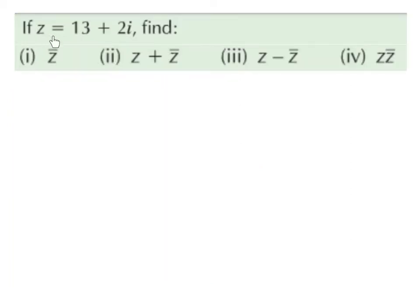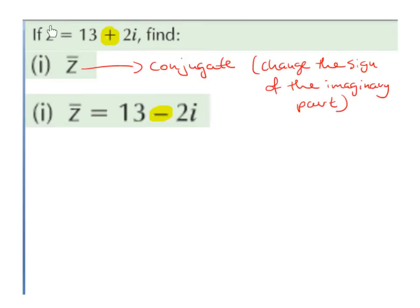If z is equal to 13 plus 2i, find the conjugate of z, z plus the conjugate of z, z minus the conjugate of z, and z multiplied by the conjugate of z. So if z is equal to 13 plus 2i, then to work out the conjugate we change the sign of the imaginary part. The 13 stays the same because that's the real part, and the plus 2i becomes minus 2i. So the conjugate of z is 13 minus 2i.